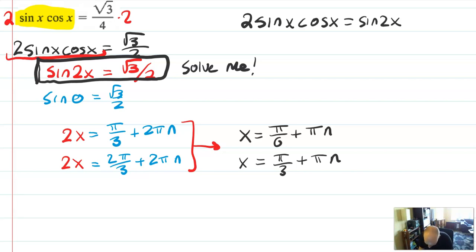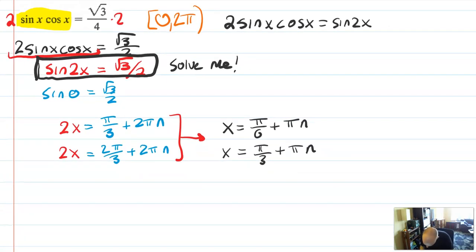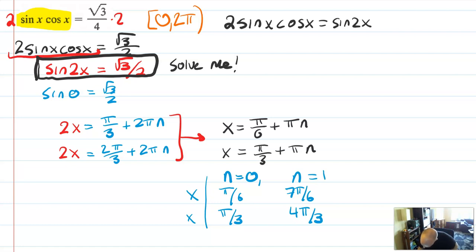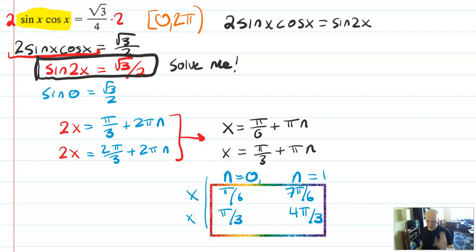I've got the generalized solutions, but I'm being asked to solve on 0 to 2π. With multiple angle equations, I have to start listing out solutions. If n equals 0, x is π/6 or π/3. If n equals 1, then I have 7π/6 and 4π/3. So I do actually have more solutions within 0 to 2π because it's a multiple angle situation. Those are my four solutions boxed from 0 to 2π. You recognize the identity you want, rearrange until you can substitute, then create those multiple angle equations.